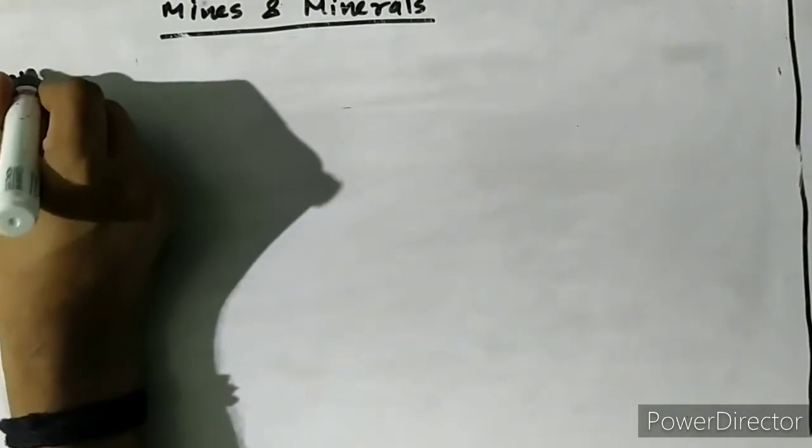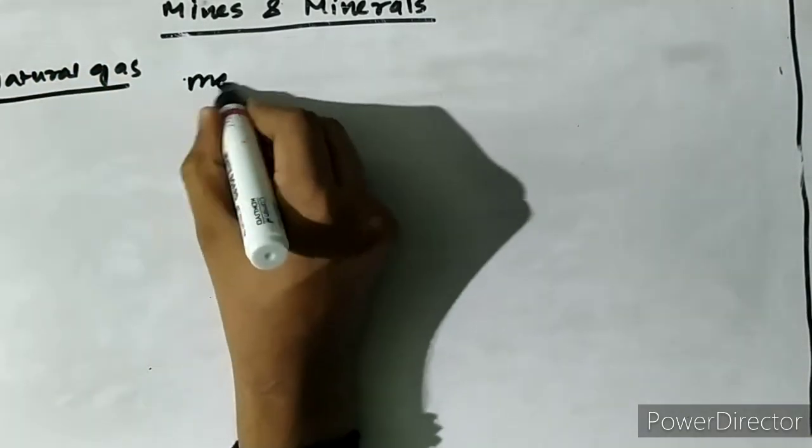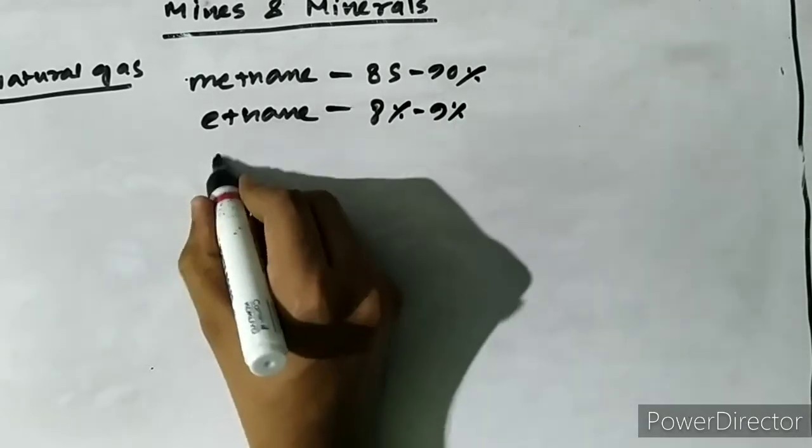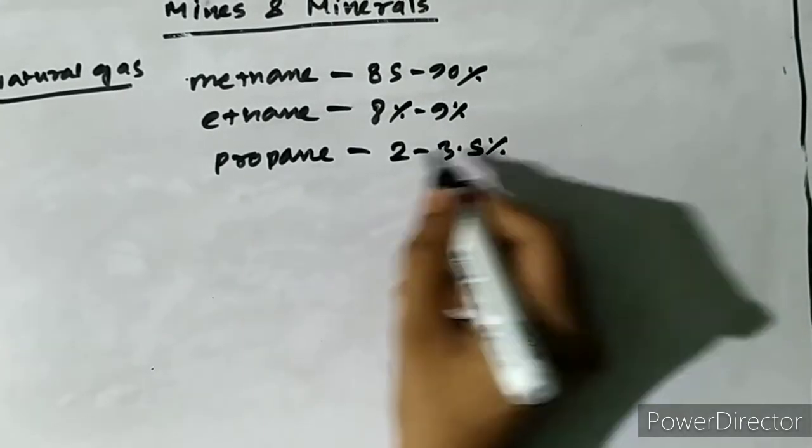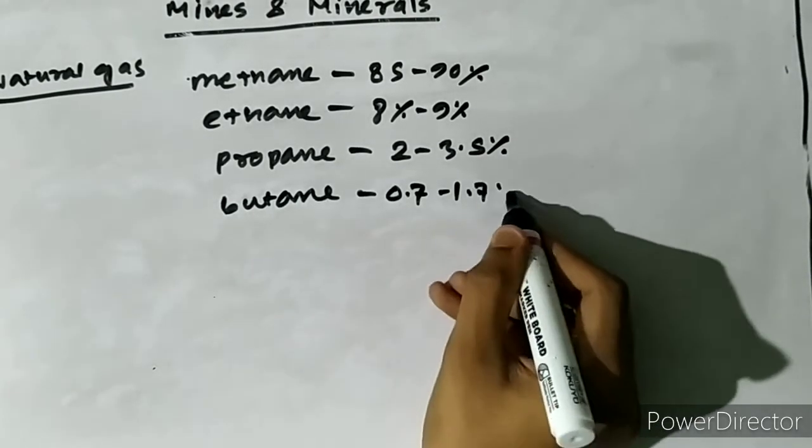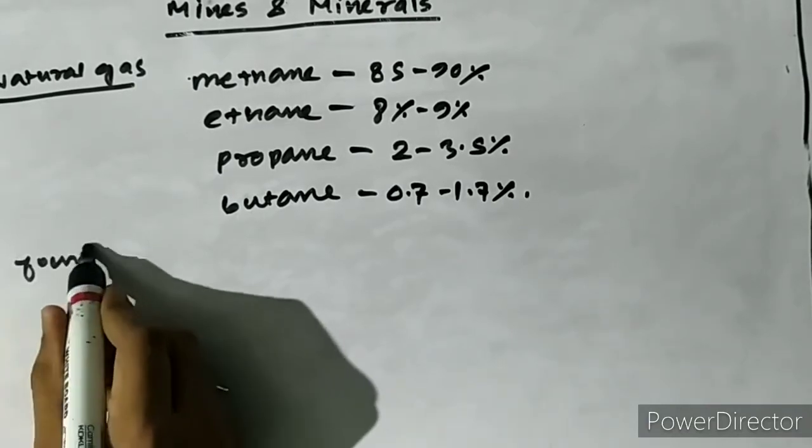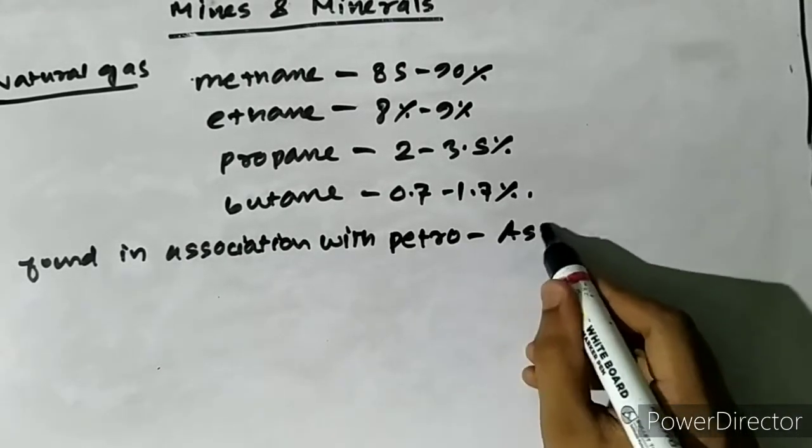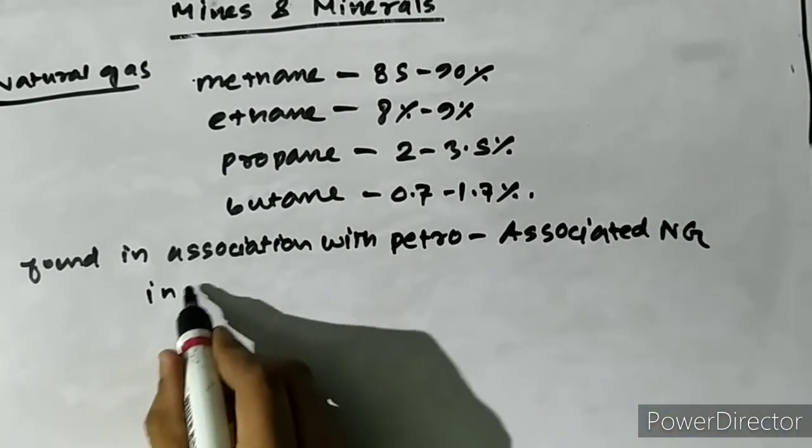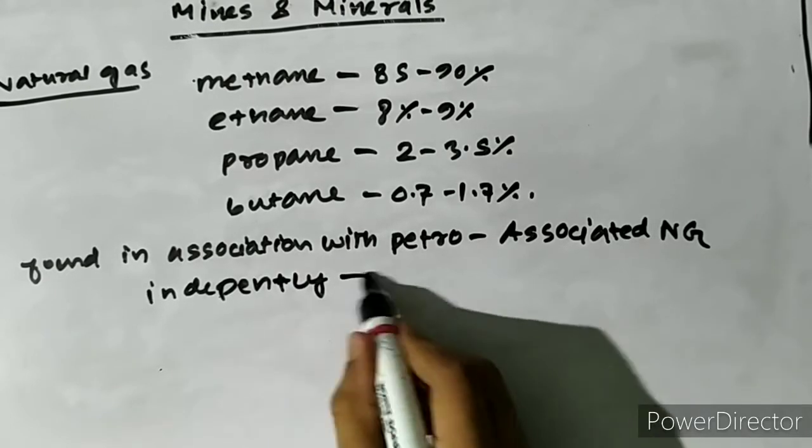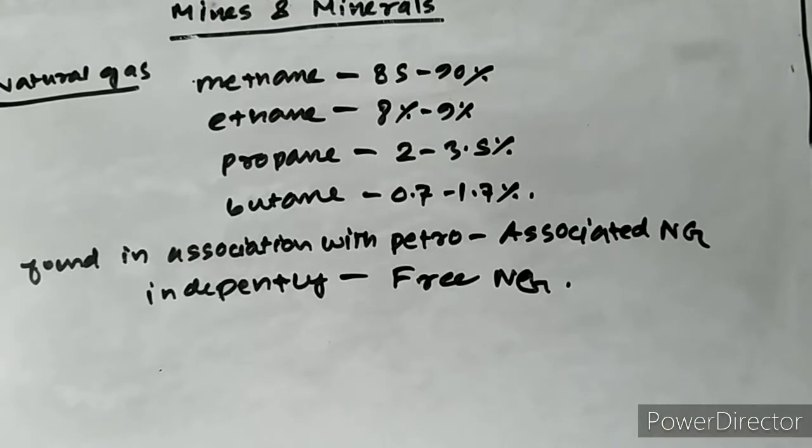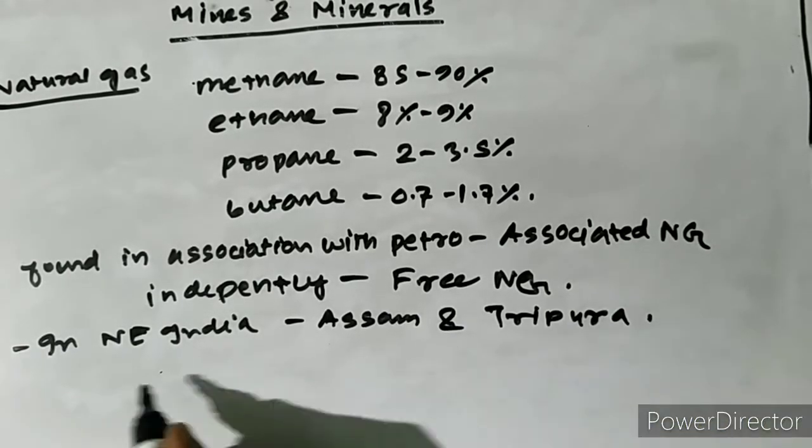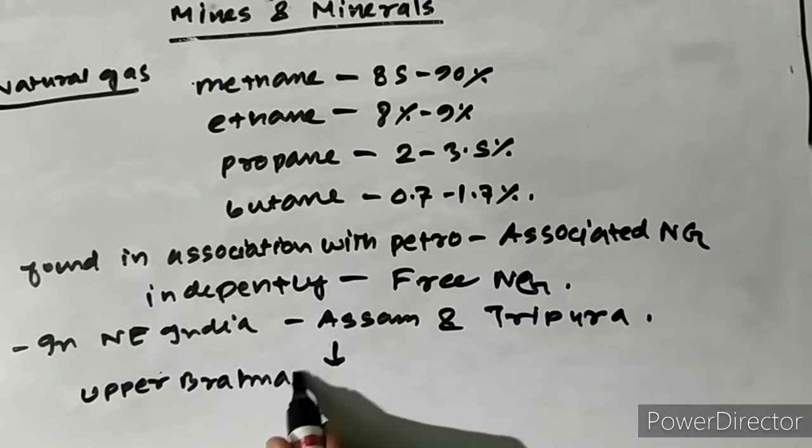Natural gas is a gaseous mineral of organic origin lying locked underground. It consists of methane in proportion of 85 to 90 percent, ethane 8 to 9 percent, propane 2 to 3.5 percent, and butane 0.7 to 1.7 percent. Natural gas is normally found in association with petroleum fields, called associate natural gas, but in certain places it may be found independently, called free natural gases. In Northeast India, natural gas is mostly found in Assam and Tripura. In Assam, almost all oil-producing areas of Upper Brahmaputra Valley produce natural gas.